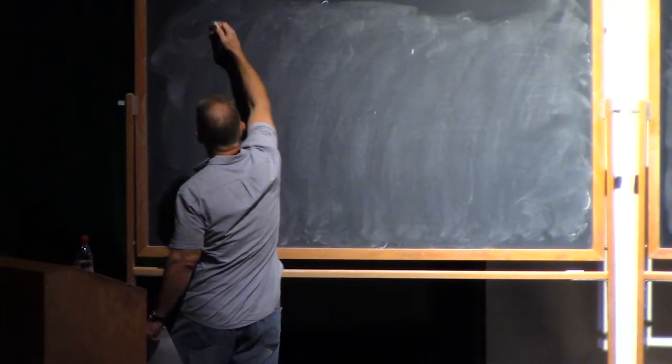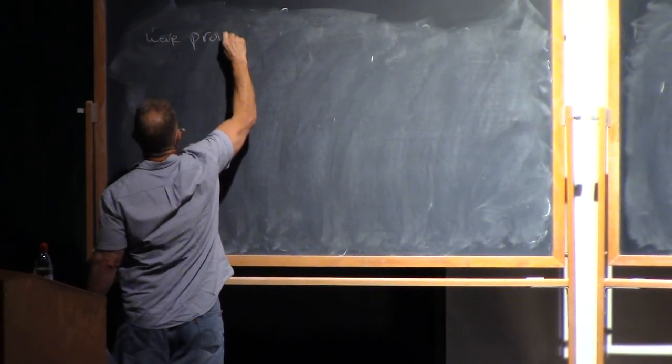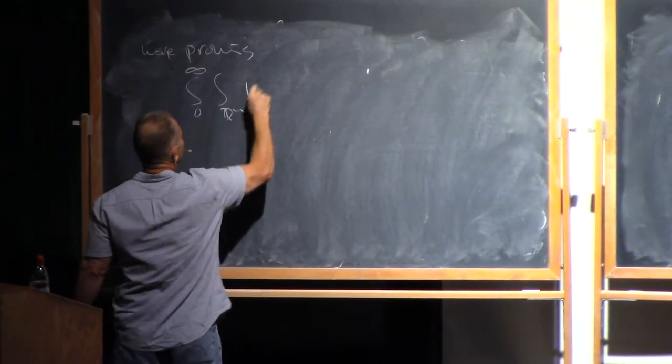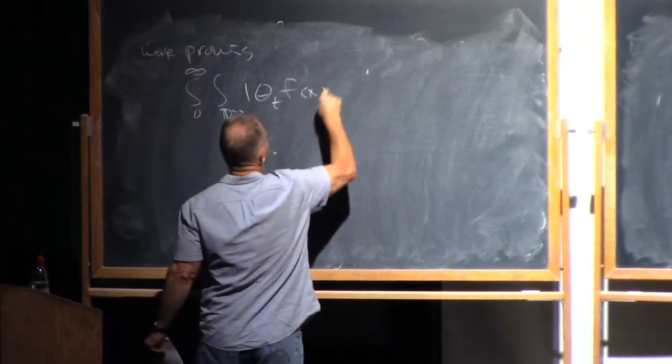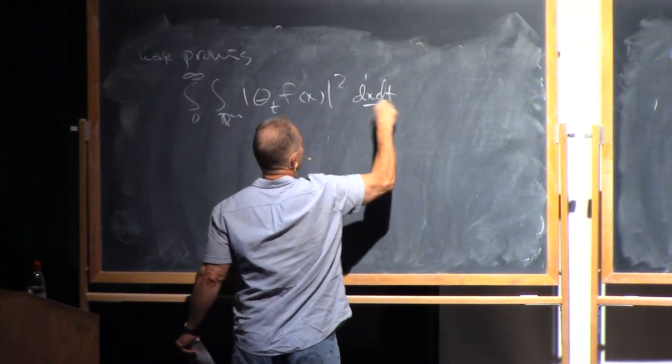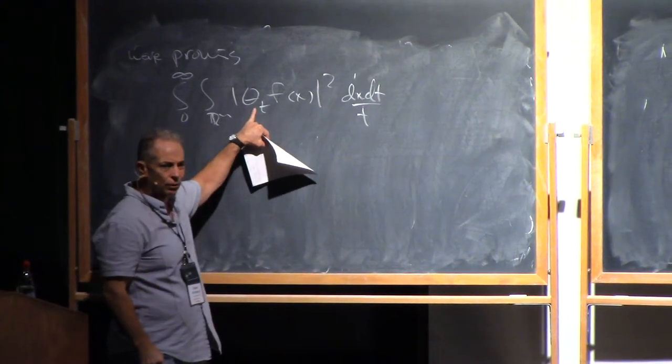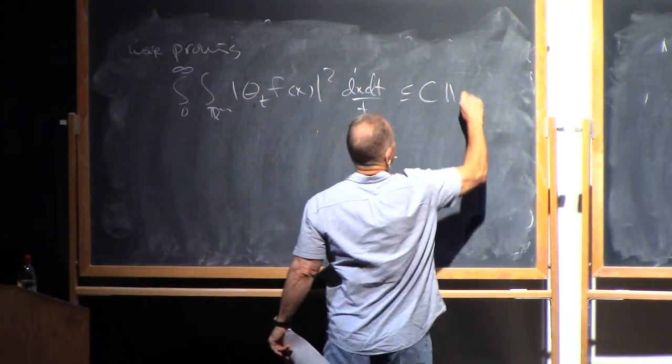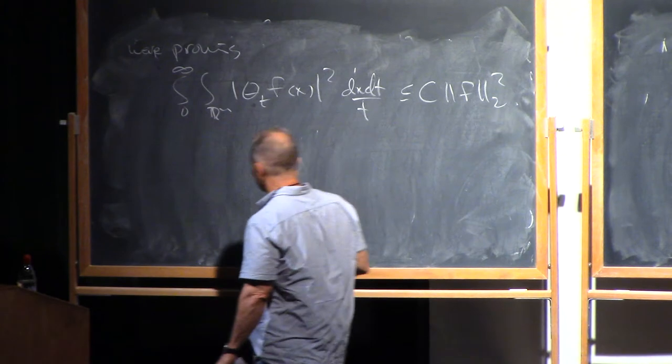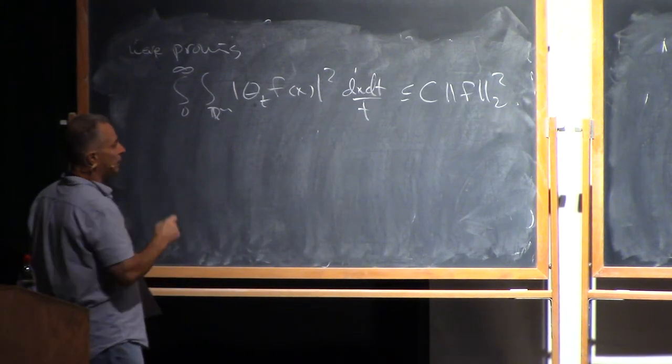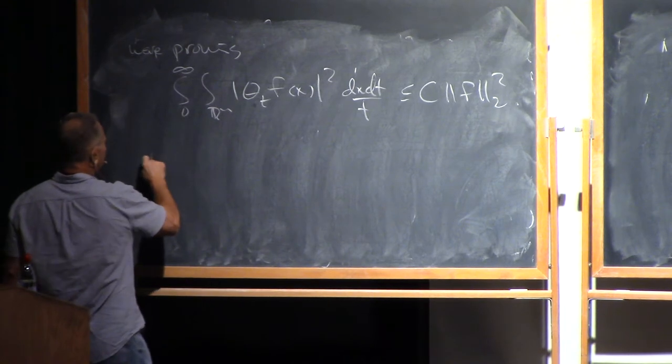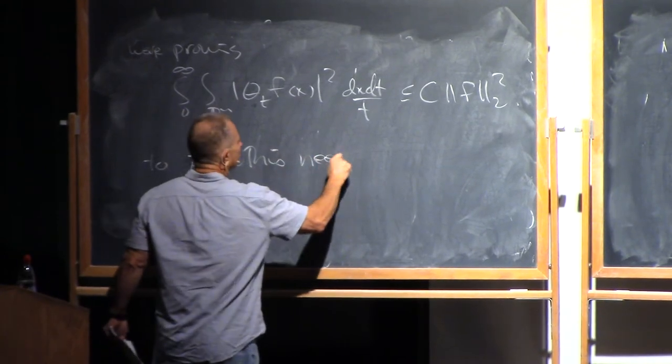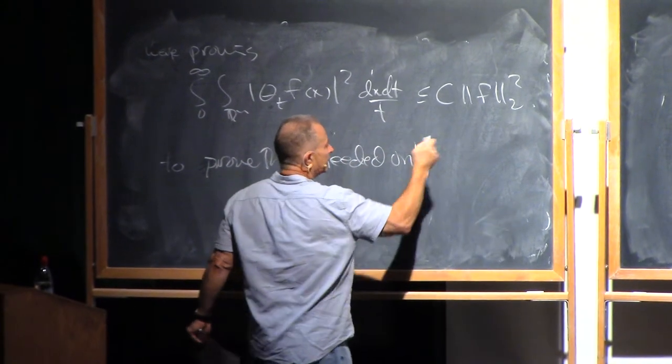So remember, we were proving that we have a square function bound for the theta t's. Remember, these theta t's are given by integration against a kernel that satisfies the Littlewood-Paley conditions. And what I want to emphasize is that the only thing needed to make this work, we only needed the quasi-orthogonality.